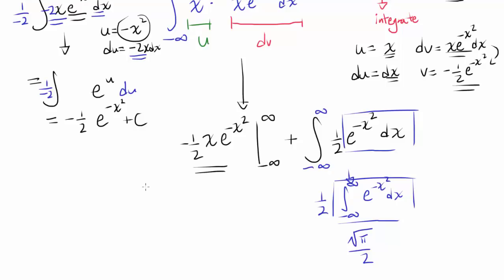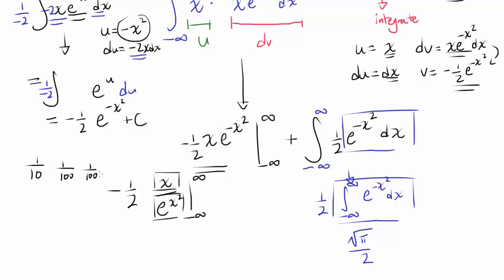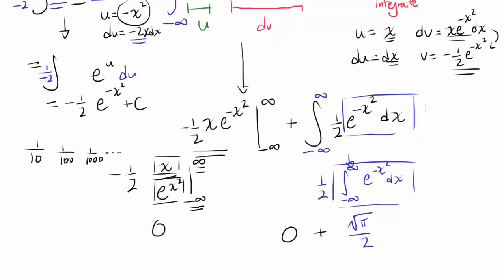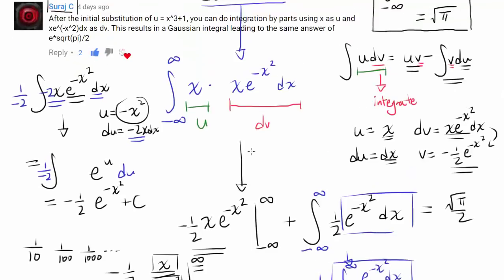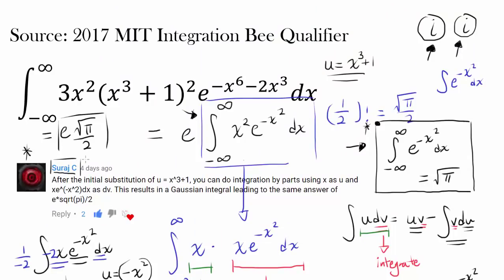How about the part to the left? Well, we have negative one-half x over e to the x squared, evaluated from negative infinity to infinity. Because the exponential function grows faster than any power function, the bottom of this fraction grows faster than the top, so this entire fraction approaches 0 at both negative infinity and infinity. So we basically have 0 plus square root of pi over 2, which is square root of pi over 2. Therefore the answer is e times square root of pi over 2, because this integral evaluates to square root of pi over 2.